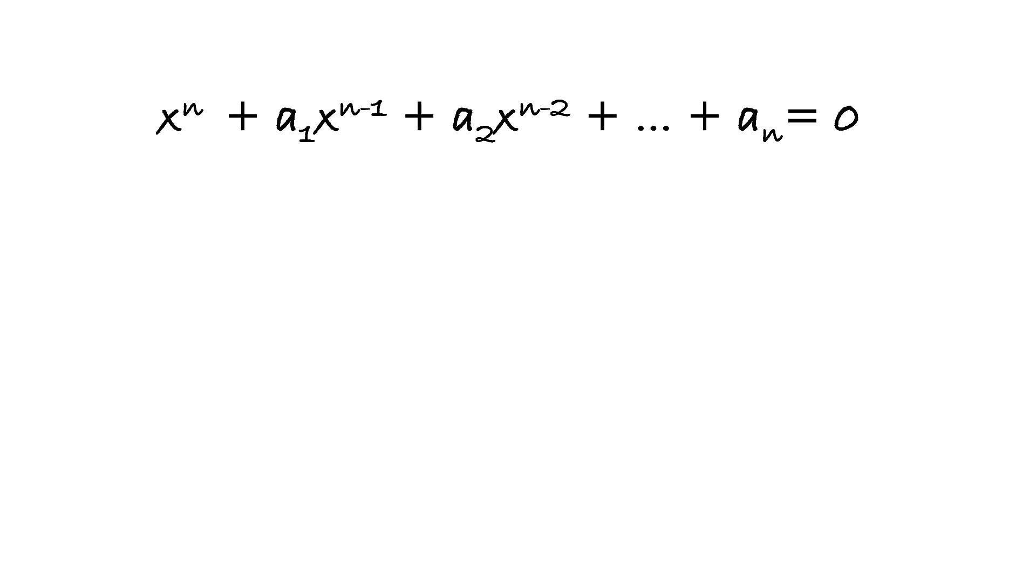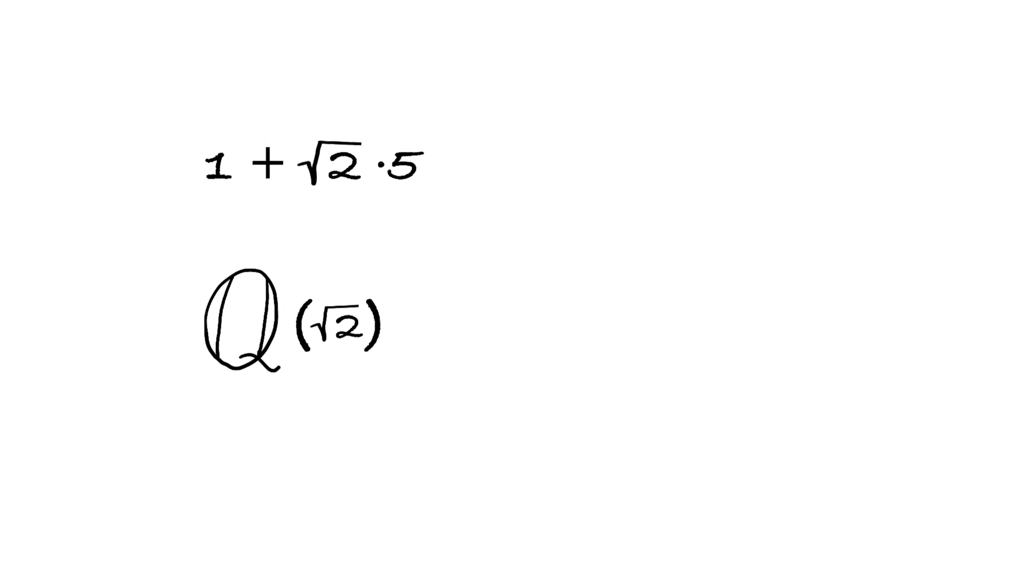Similarly, for any polynomial equation, we can create an extension field of rational numbers with the help of all of its roots. But let's get back to our previous example and see what happens if in this extended field we switch the roots around. So let's pick some element from our field and in it we will replace square root of 2 with minus square root of 2.